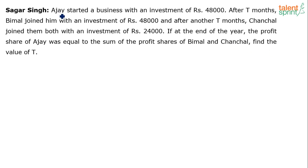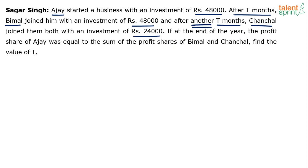So Ajay started the business and invested 48,000. After T months, Bimal joined with 48,000. After another T months, Chanchal joined them both with an investment of rupees 24,000. The times they spent are expressed in terms of T. At the end of one year, the profit share of Ajay was equal to the sum of the profit shares of Bimal and Chanchal.